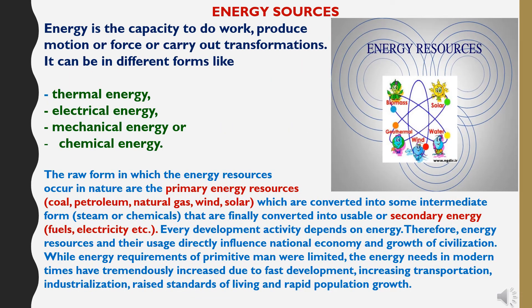Now, energy resources. Energy is the capacity to do work, produce motion or force, or carry out transformations. It can be in different forms like thermal energy, electrical energy, mechanical energy or chemical energy. The raw forms in which energy resources occur in nature are the primary energy sources like coal, petroleum, natural gas, wind, and solar, which are converted into intermediate forms like steam or chemicals, and finally into usable or secondary energy like fuel and electricity.